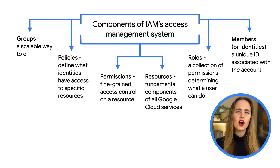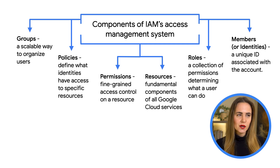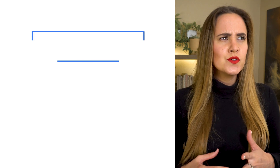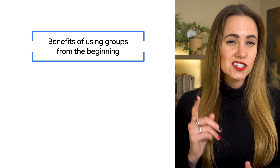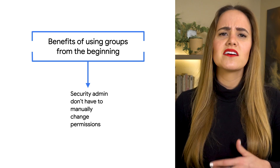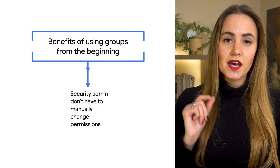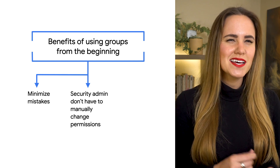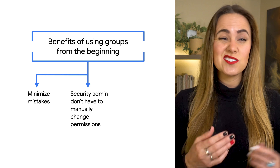Groups are used to help you manage users at scale. Each member of a Google group inherits the identity and access management roles granted to that group, meaning you can use group membership to manage users' roles instead of granting IAM roles to individual users. A good strategy is to use groups from the beginning, so the security admin doesn't have to manually change permissions as employees get hired, fired, or moved throughout the organization — the right policies are automatically assigned to anyone moved into the correct group. Instead of assigning roles and permissions to a specific employee, assign them to groups and add employees to the correct groups.